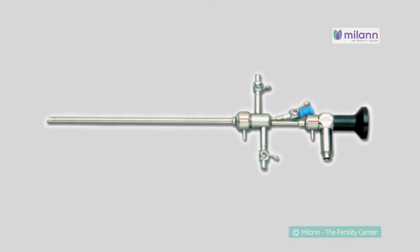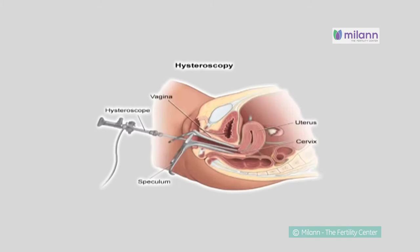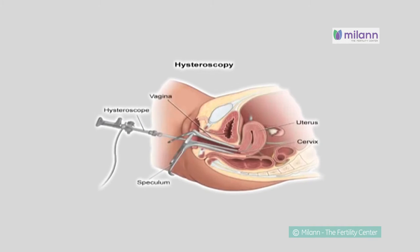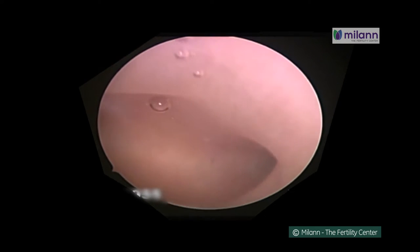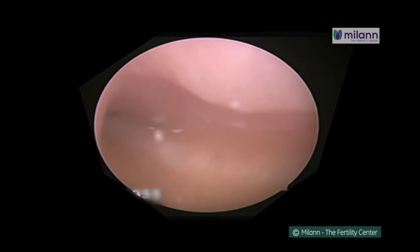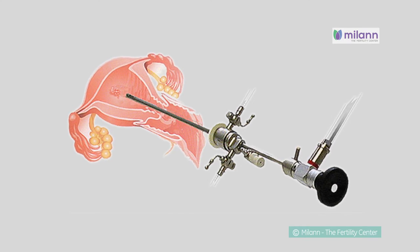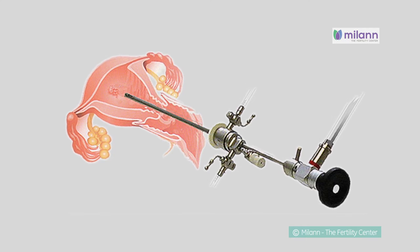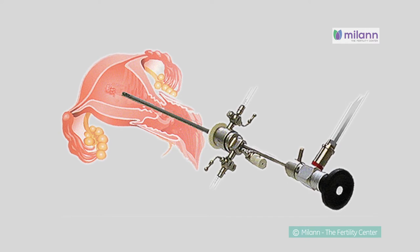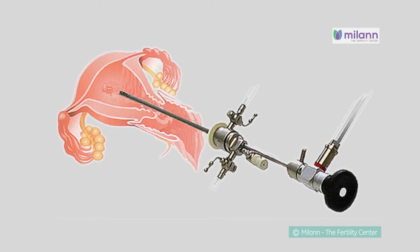Hysteroscopy is done using a hysteroscope, a thin lighted tube that is inserted into the vagina to examine the cervix and inside of the uterus. A hysteroscopy could be a diagnostic procedure or an operative procedure depending on the nature of what is seen. Diagnostic hysteroscopy is used to diagnose problems of the uterus.